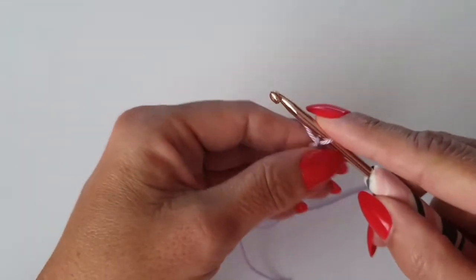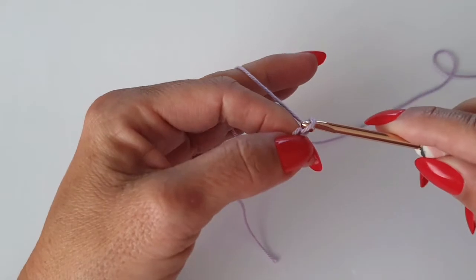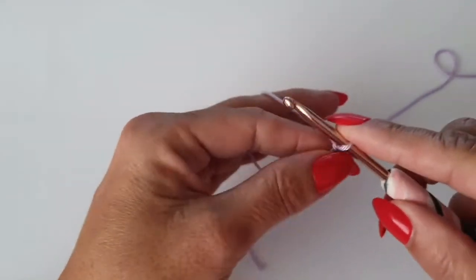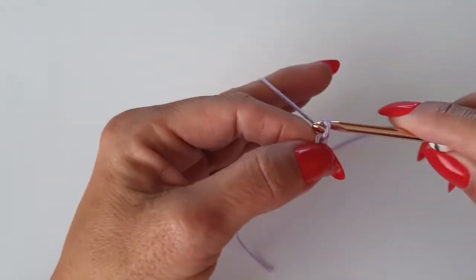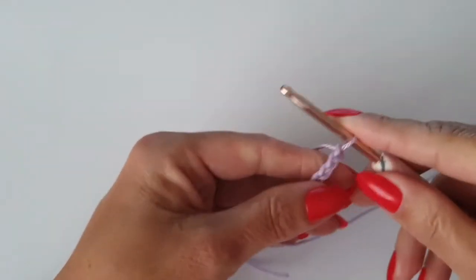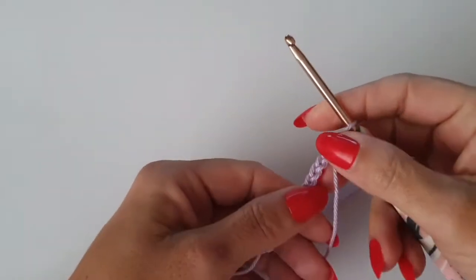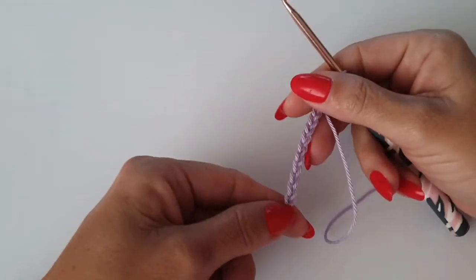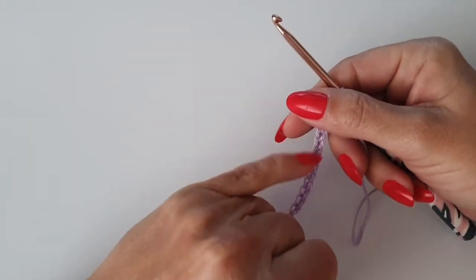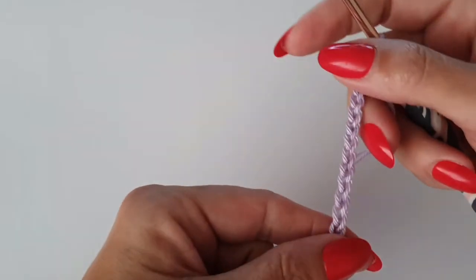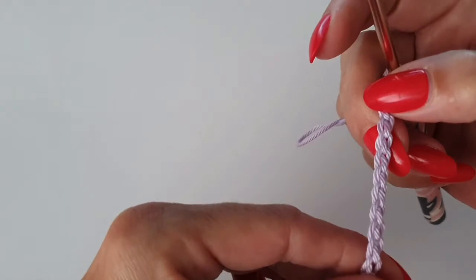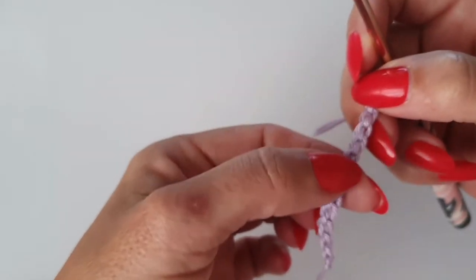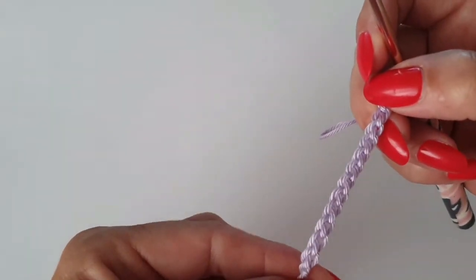Until you have enough chain stitches for whatever it is you're making. On a chain stitch, if you have a look, the front of your chain stitch will have this v pattern on the stitches, and the back of the stitch has a line of ridges. Okay, so if you're ever asked for the front...